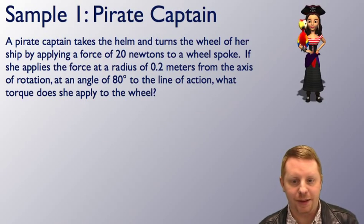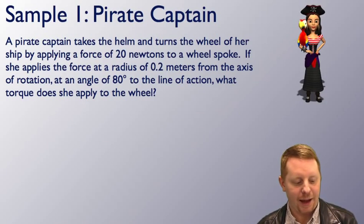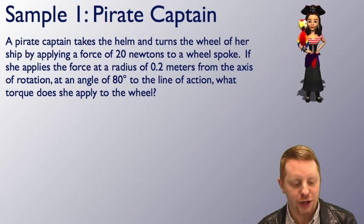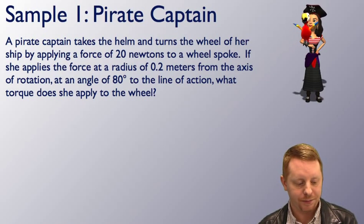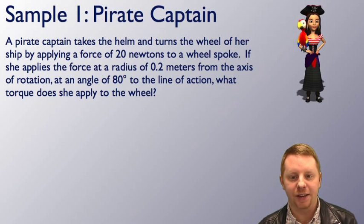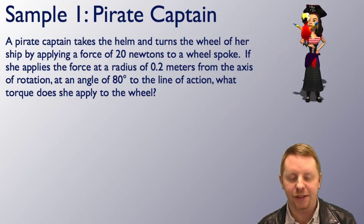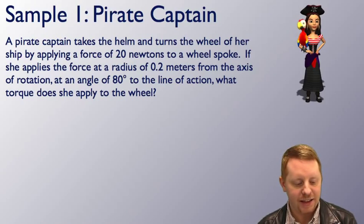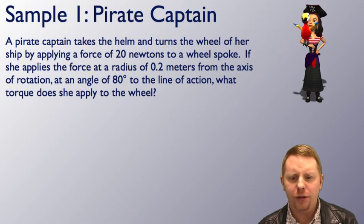So let's take a look at some examples. Here we have a pirate captain taking the helm and turning the wheel of her ship by applying a force of 20 newtons to a wheel spoke. If she applies the force at a radius of 0.2 meters from the axis of rotation, at an angle of 80 degrees to the line of action, what torque does she apply to the wheel?